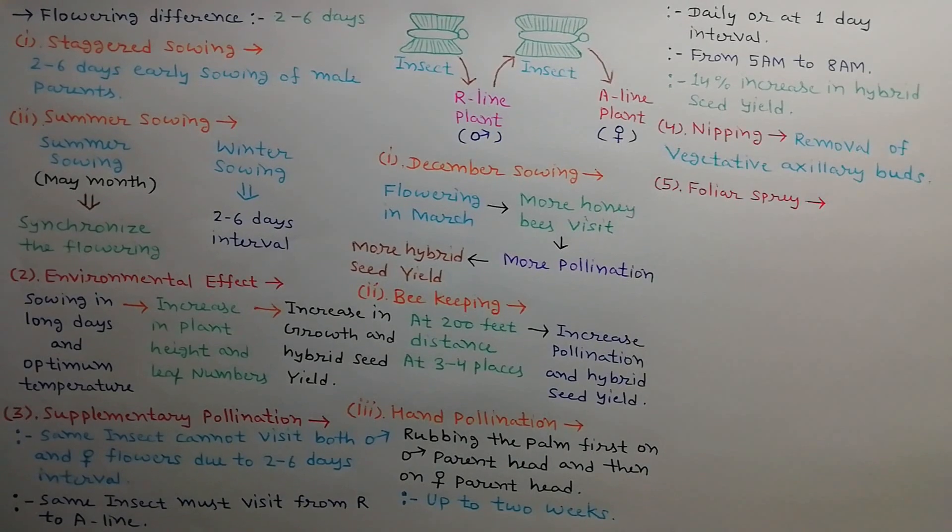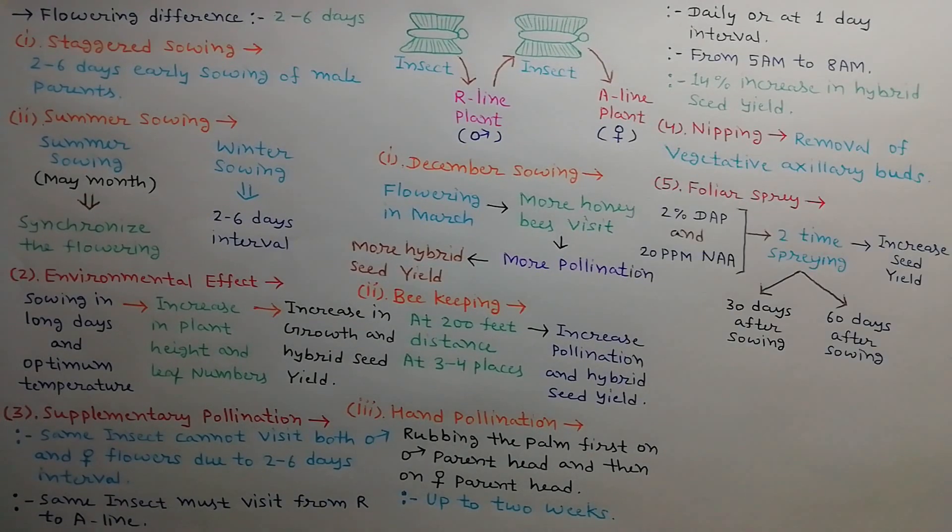Fifth is foliar spray. Two times spray of 2% DAP solution and 20 ppm NAA solution at 30th day after sowing and 60th day after sowing at the head opening stage increase the hybrid seed yield.